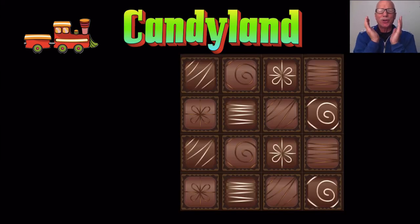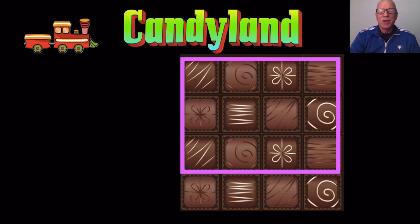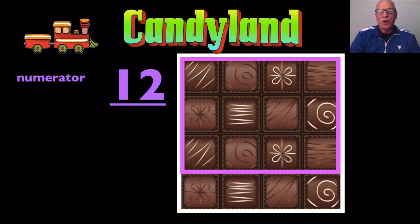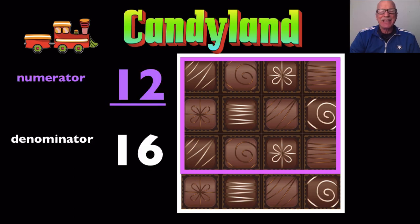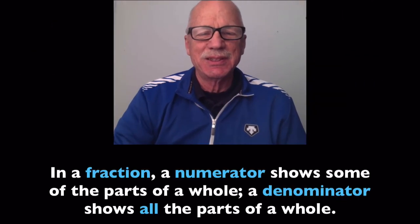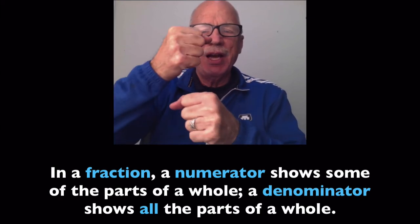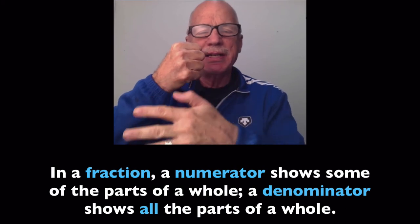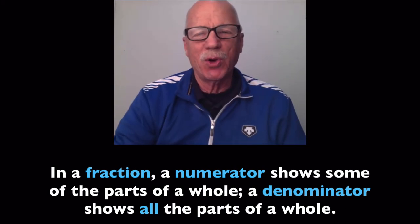Oh, that looks so yummy. There are three, six, nine, twelve — there's twelve parts of the whole. And in the whole there's sixteen pieces of chocolate. So twelve of sixteen: twelve is some, sixteen is all. In a fraction, a numerator shows some of the parts of the whole, and a denominator shows all of the parts of a whole.